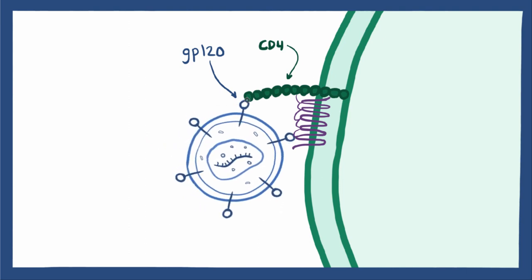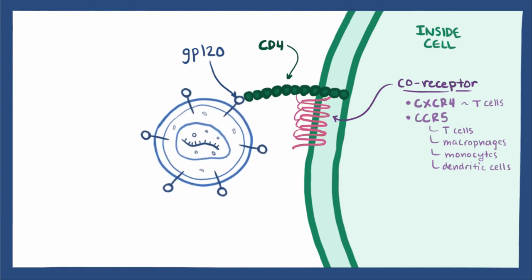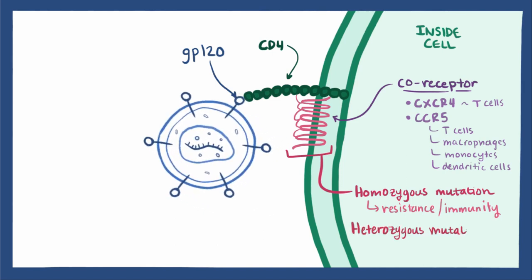HIV then uses GP120 to attach to another receptor called a coreceptor. HIV needs to bind to both the CD4 molecule and the coreceptor to get inside the cell. The most common coreceptors are the CXCR4 coreceptor, found mainly on T cells, or the CCR5 coreceptor, found on T cells, macrophages, monocytes, and dendritic cells. Some people with homozygous genetic mutations in their CCR5 actually have resistance or immunity to HIV, since HIV can't attach and get into the cell. Even heterozygous mutations, which lead to fewer coreceptors, can slow disease progression.